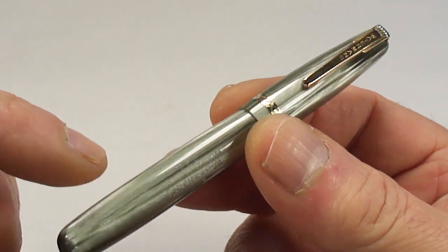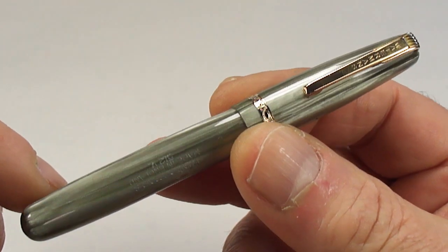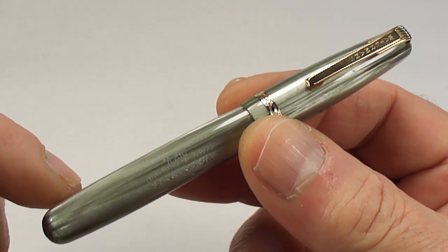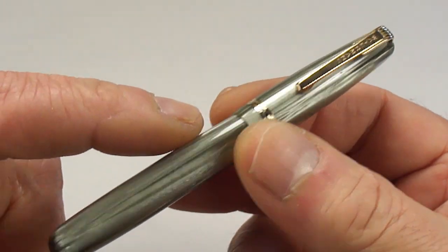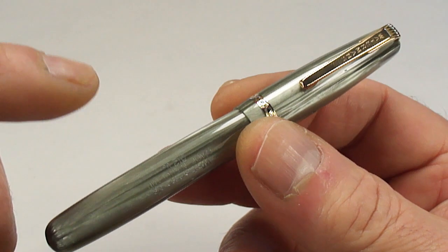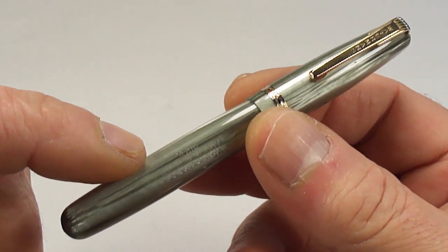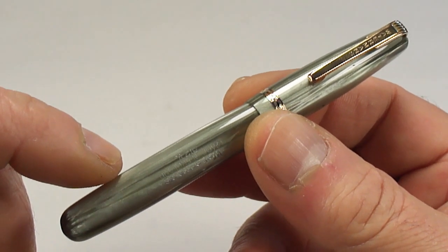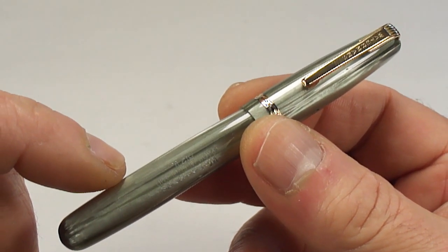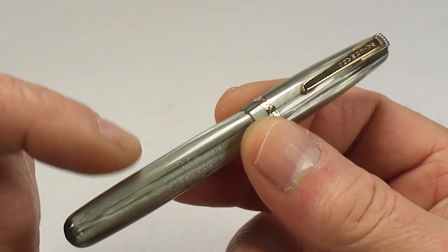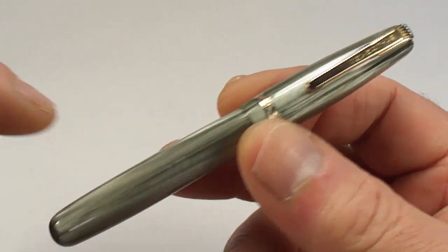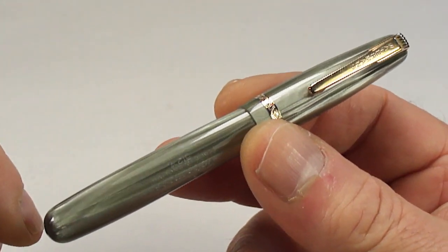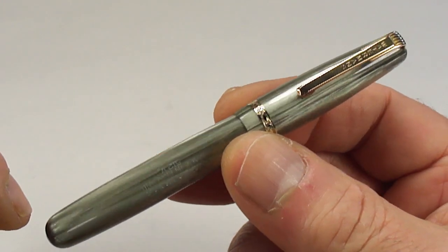They also came in these pearl colors. I believe they did a sort of silver pearl which was slightly darker than this particular one. They also did a gold pearl as well, and what they term as a striated fountain pen in gold. They did a pink striated color, and I think they also brought this one out in a blue pearl as well.